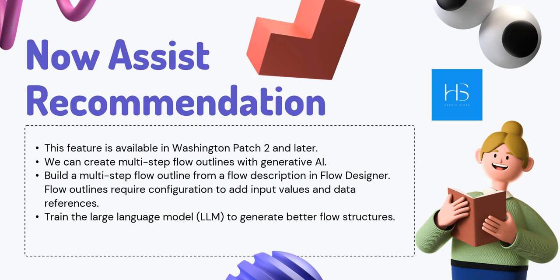Next is Now Assist Recommendation — my second favorite feature. I'm waiting for Washington Patch 2 because that's where it's available. With this feature you can build a multi-step flow using Generative AI: you provide a flow description when defining a new flow, and ServiceNow uses its GenAI capabilities to automatically generate a flow structure for you. It won't have configurations, but it gives you the skeleton which you can then configure.